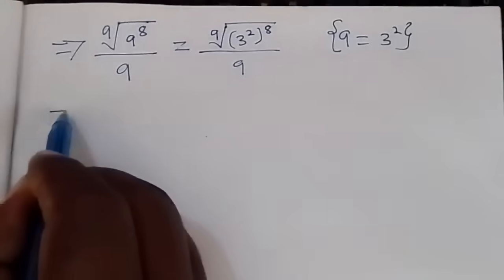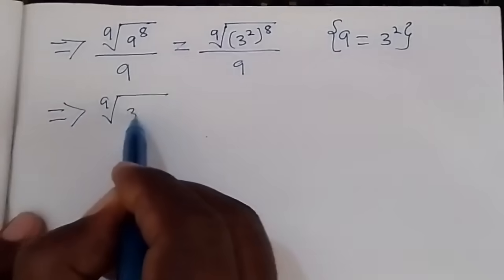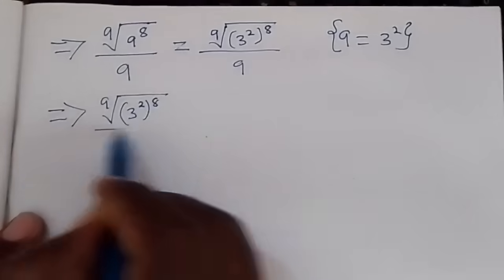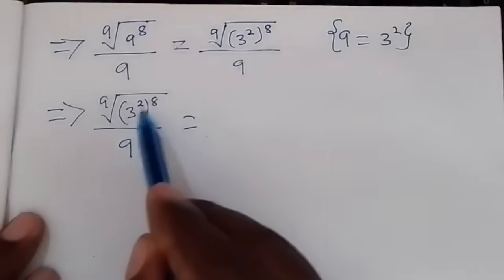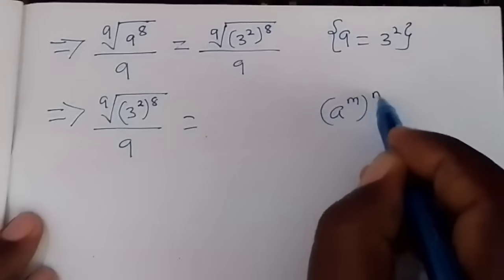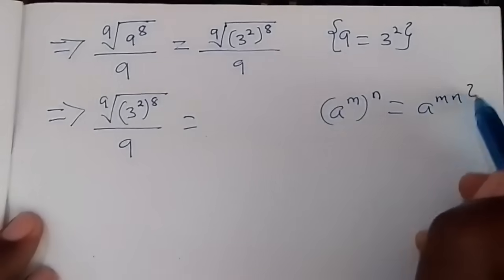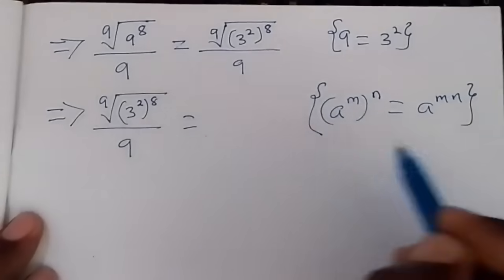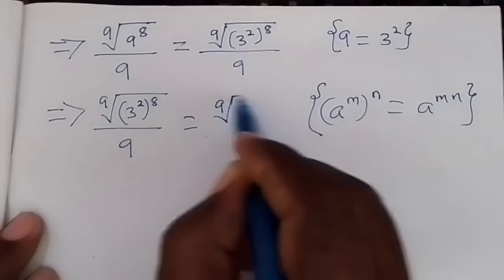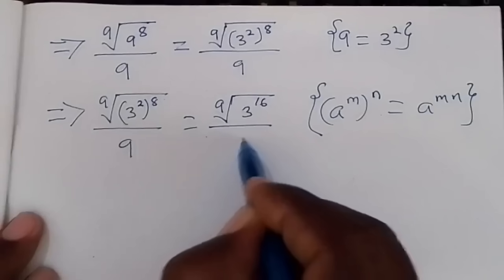Next, applying the rule that a raised to power m, the whole raised to power n, is the same as a raised to power m times n — you multiply the powers when in this form. Therefore this becomes the 9th root of 3 raised to power 16, because 2 times 8 equals 16, over 9.